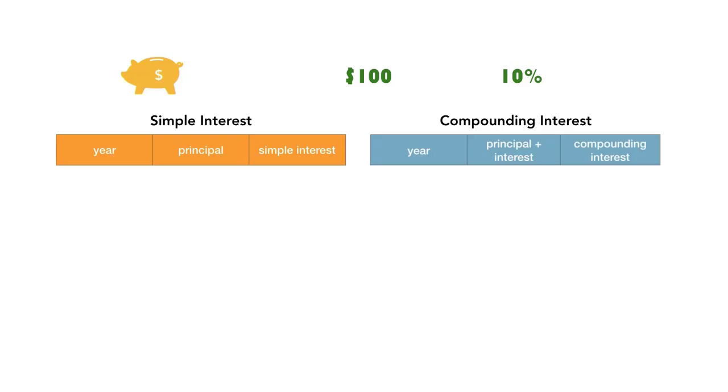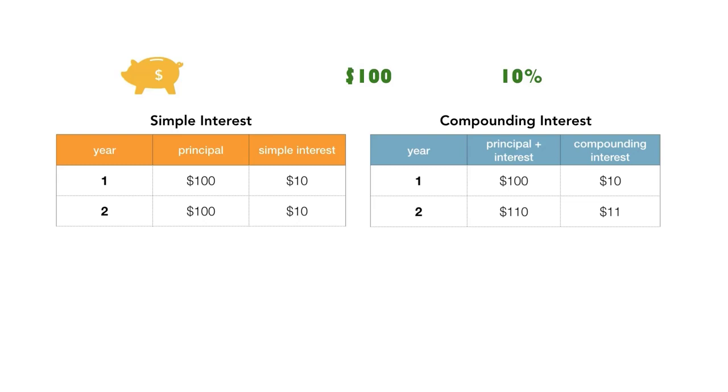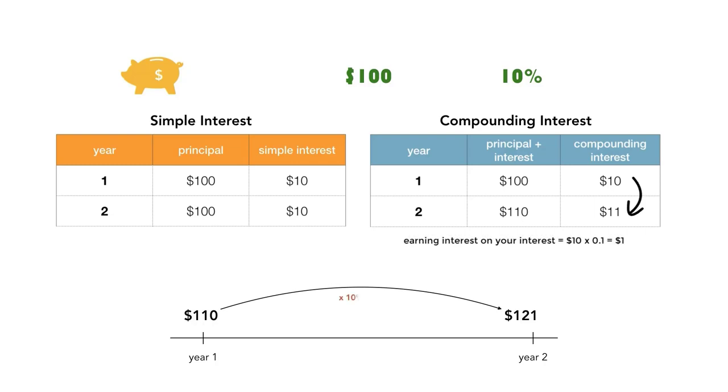If you earned simple interest, you would receive $10 for your first year. It's the same for compound interest. For your second year, you would have still earned $10 under simple interest, but $11 under compound interest. Where did this $1 difference come from? It's because the $10 interest you earned in year 1 stayed in your account. So you effectively earned interest on your interest. Notice how 10% interest earned on $10 is $1, which is the $1 difference between the interest earned in year 1 versus year 2.